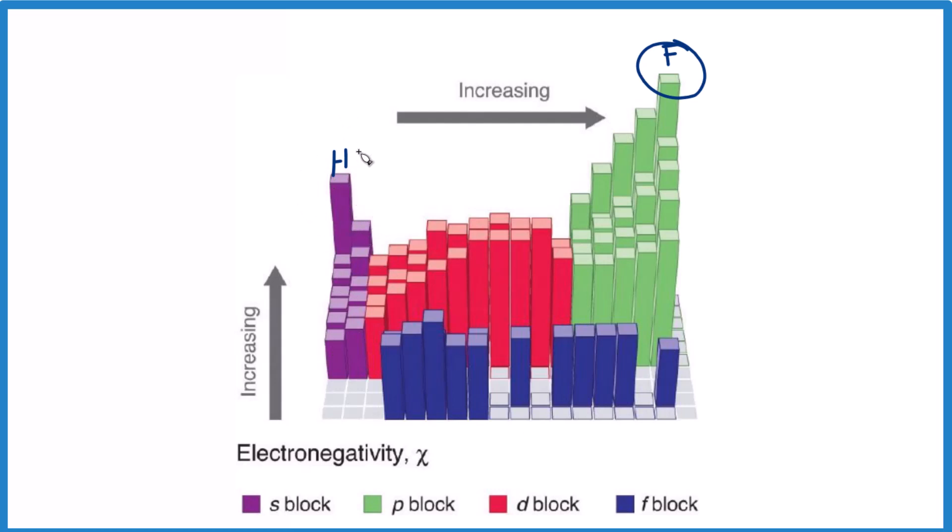Part of that is that hydrogen is often considered to be a nonmetal, like these elements over here, but we put it in group one because it forms ions that are one plus like the rest of the group. But that's it. And I think this is probably one of the best representations for electronegativity and how it increases going up groups and increases going across periods.